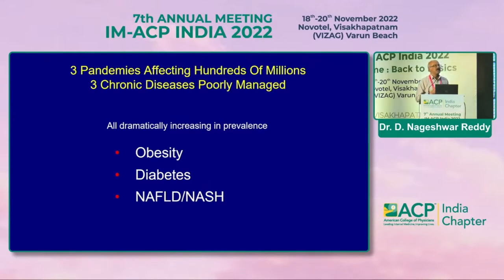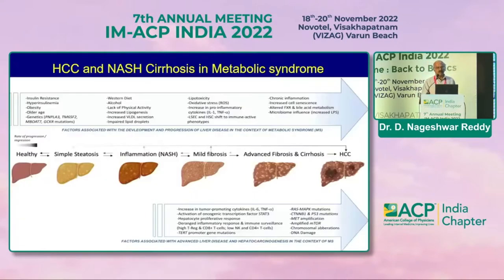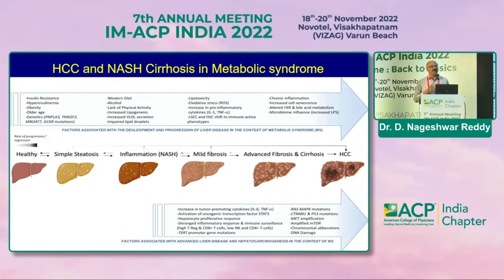We are now understanding how this is evolving. For the gastroenterologist, not only is metabolic syndrome associated with NAFLD, but also with gallstones, steatosis, GERD, and so on. The most important problem is liver-related. NAFLD — non-alcoholic fatty liver disease — and metabolic syndrome are almost synonymous. It starts with simple steatosis, goes into NASH, then fibrosis, advanced fibrosis, cirrhosis, and finally a significant percentage of these patients develop hepatocellular carcinoma. The whole spectrum evolves along with the metabolic syndrome they have.